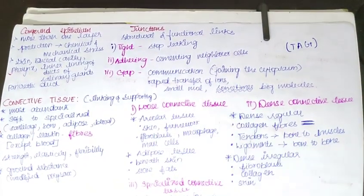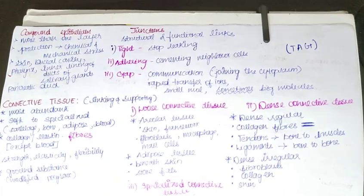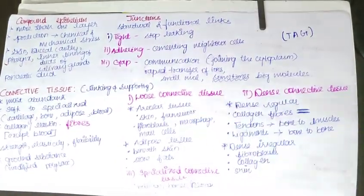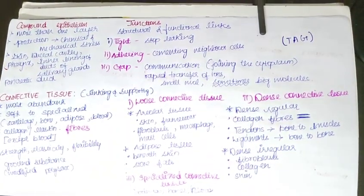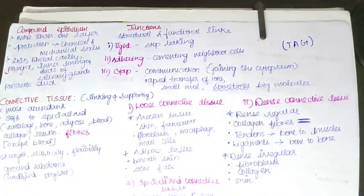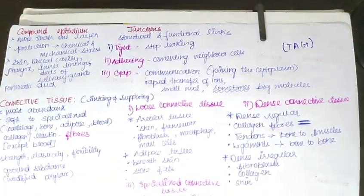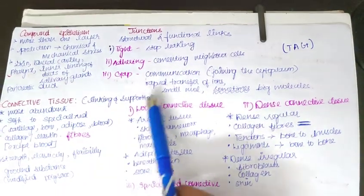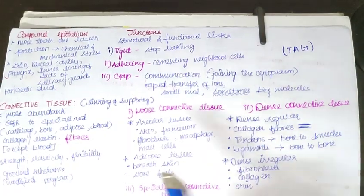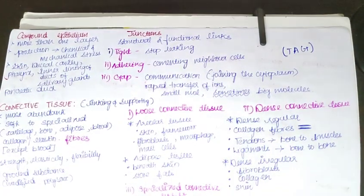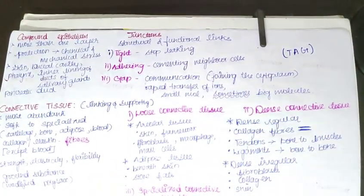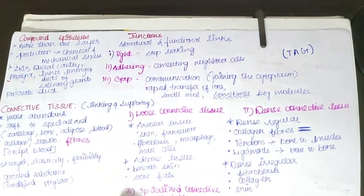Connective tissue is further divided into three types: loose connective tissue, dense connective tissue, and specialized connective tissue. Within loose connective tissue, we have two types — areolar and adipose. Areolar tissue is present beneath the skin and acts as a framework for epithelium. It contains fibroblasts, macrophages, and mast cells. Adipose tissue is also present beneath the skin and stores fats.